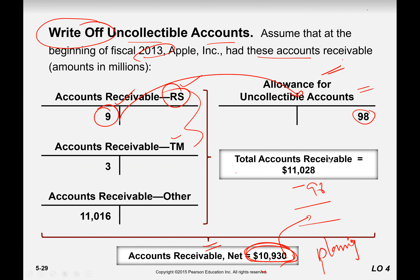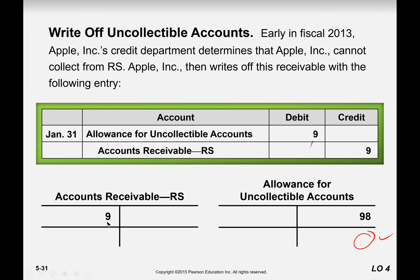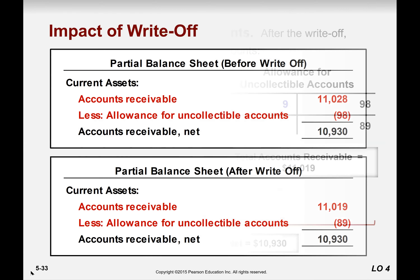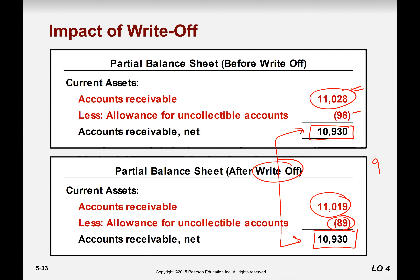We only decrease: we cancel RS and charge this expense to the allowance, and our net realizable value is the same. After we charge this account, our net value is the same. To present it: before write-off — total accounts receivable minus allowance equals 10,930. After write-off and RS didn't pay us 9 million — receivable decreases, allowance decreases — and our net remains the same.